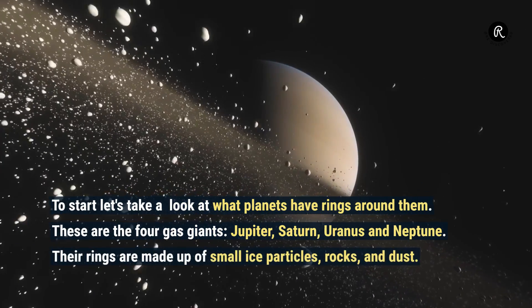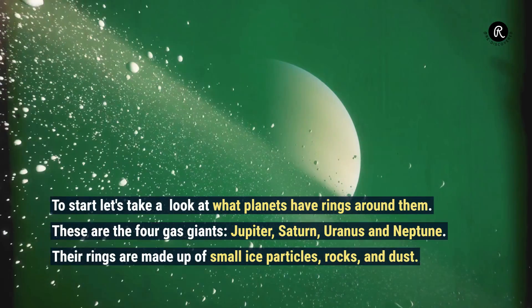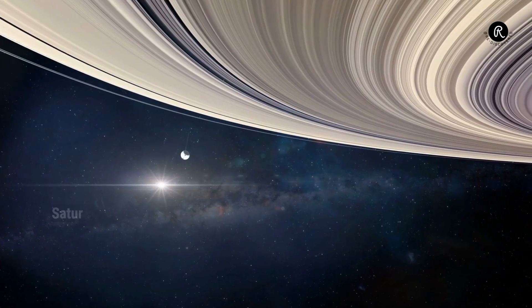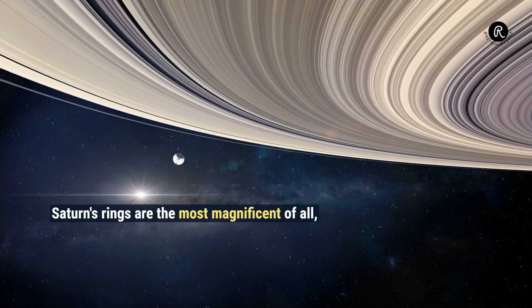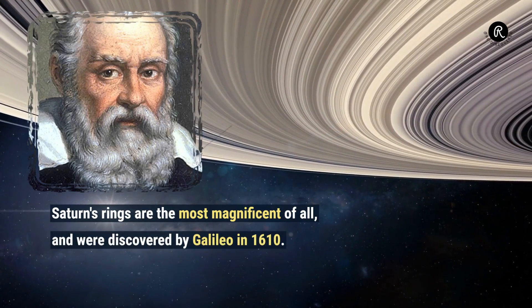Their rings are made up of small ice particles, rocks, and dust. Saturn's rings are the most magnificent of all and were discovered by Galileo in 1610.